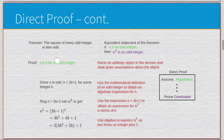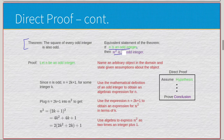The theorem states: the square of every odd integer is also odd, or equivalently, if n is an odd integer then n squared is an odd integer. So our definitive hypothesis is that n is an odd integer, and our conclusion is that n squared is an odd integer — both should be odd integers.